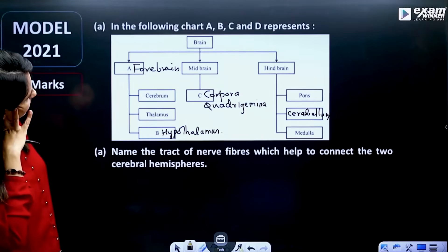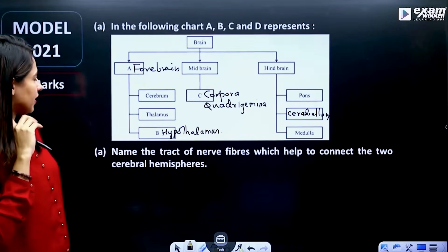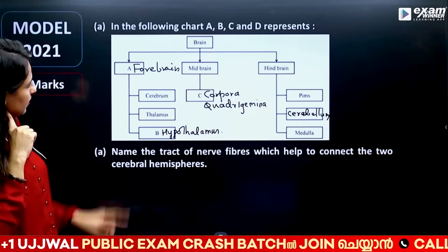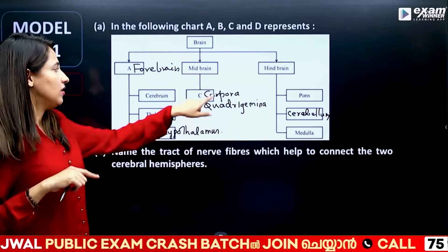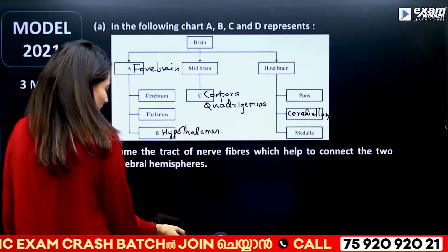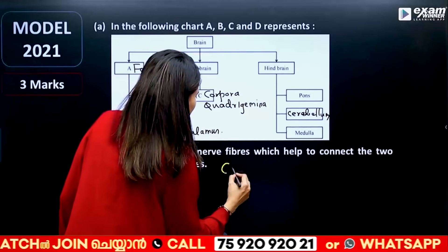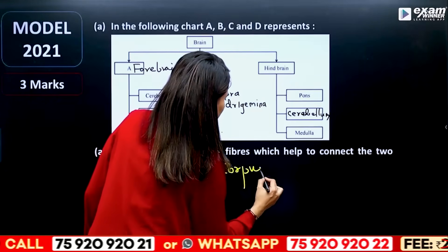That's why we have to connect the cerebral hemispheres. You can see it — that is why we have 4 options: A, B, C, D. Now, if you have to identify a tract of nerve fibers that connects the cerebral hemispheres, we put corpus callosum.